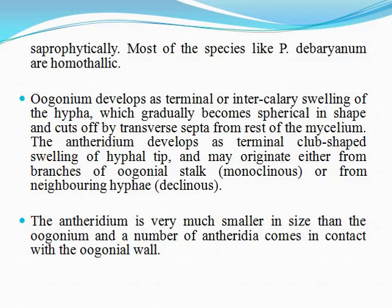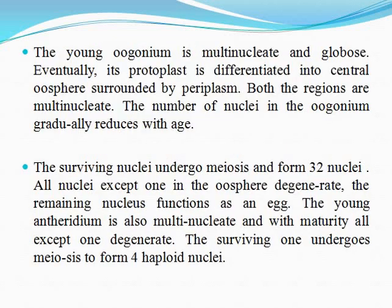The oogonium is of the oogamous type. Multiple antheridia come in contact with the oogonium wall. The young oogonium is multi-nucleate and globose. Eventually, its protoplast is differentiated into a central oosphere surrounded by periplasm, and both regions are multi-nucleate. The number of nuclei in the oogonium gradually reduces with age, possibly guided by meiosis.